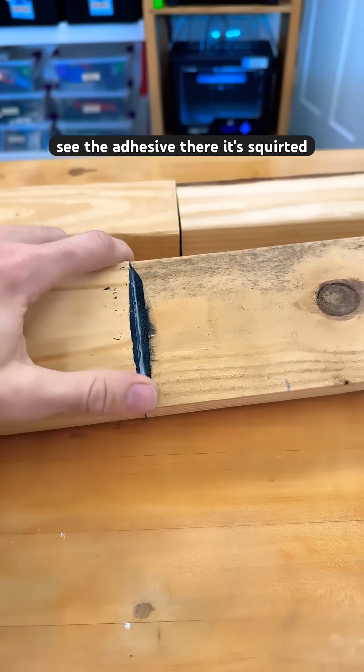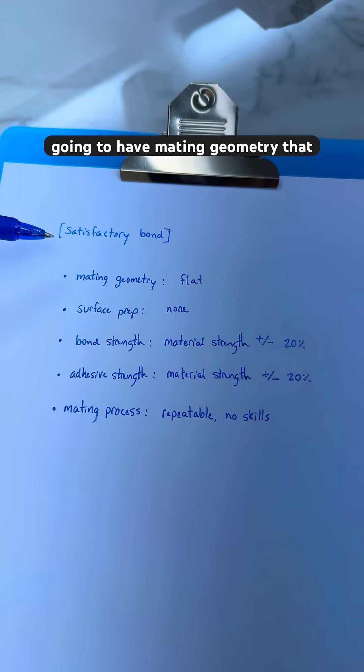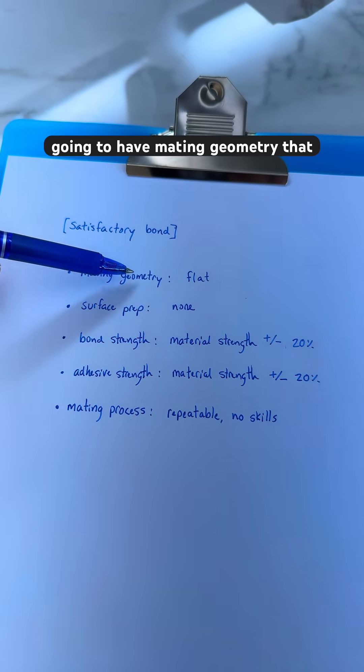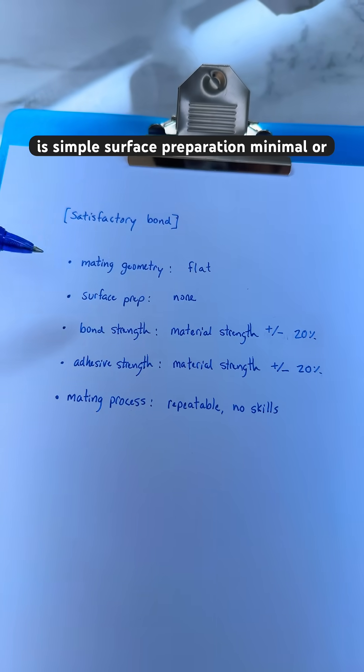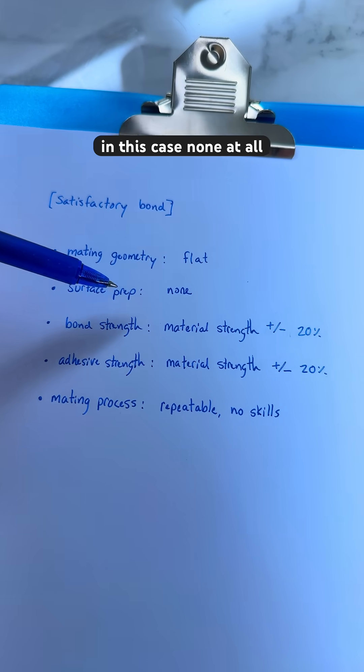You can see the adhesive there. It's squirted out a little. Satisfactory bonds are going to have mating geometry that is simple, surface preparation minimal, or in this case none at all.